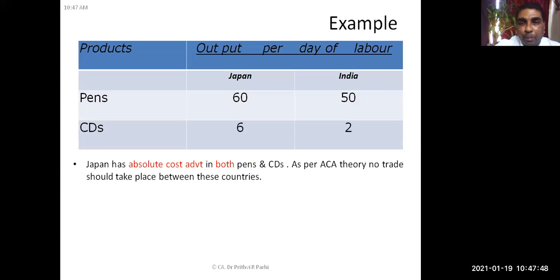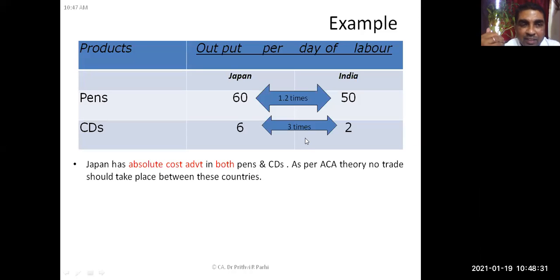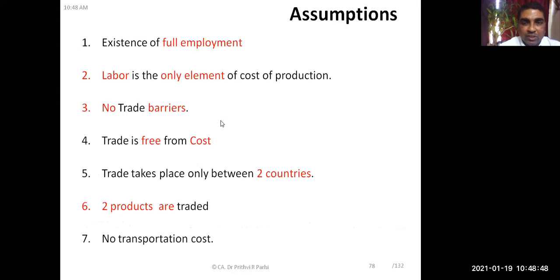In comparative cost advantage theory, instead of absolute cost, comparative costs are considered. For example, comparing Japan and India: Japan is superior in production of both paints and CDs, but Japan is 1.2 times superior in paints and 3.3 times superior in CDs. Therefore, comparatively, it is advisable that Japan should produce CDs — where it is more superior — and India should produce paints, enabling international trade between these two countries.